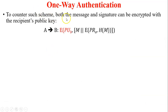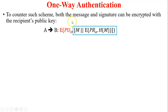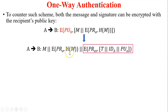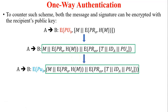To counter such fraud, both the message and digital signature can be encrypted with the receiver's public key. The highlighted box shows the message that was vulnerable in the previous scheme; encrypting with the receiver's public key removes the risk of fraud. To add more authentication, include the digital certificate of the sender. To add confidentiality, encrypt the message using the receiver's public key. This is called one-way authentication using asymmetric encryption.